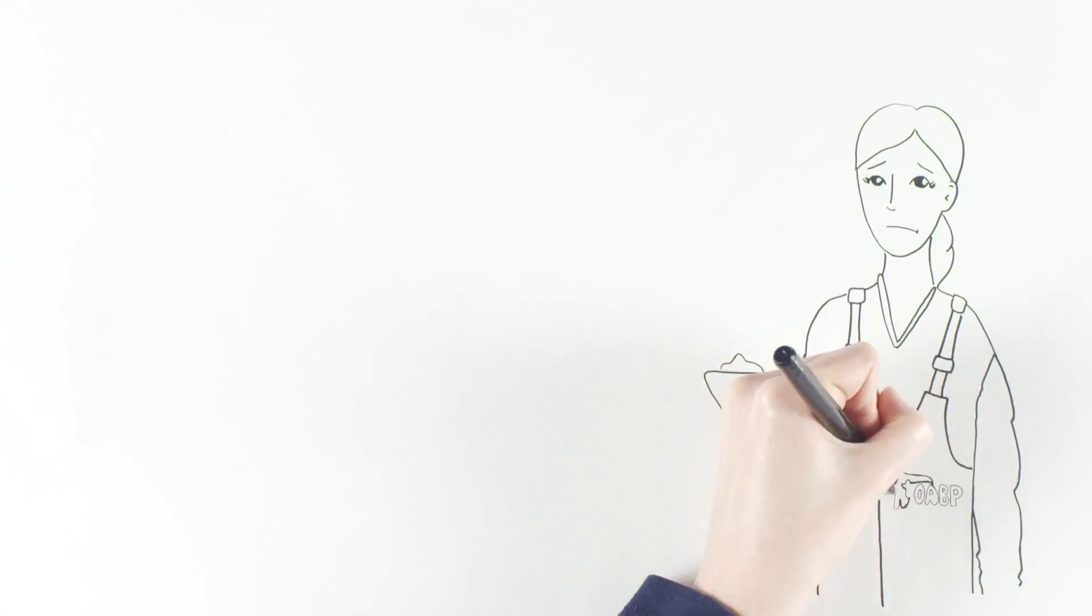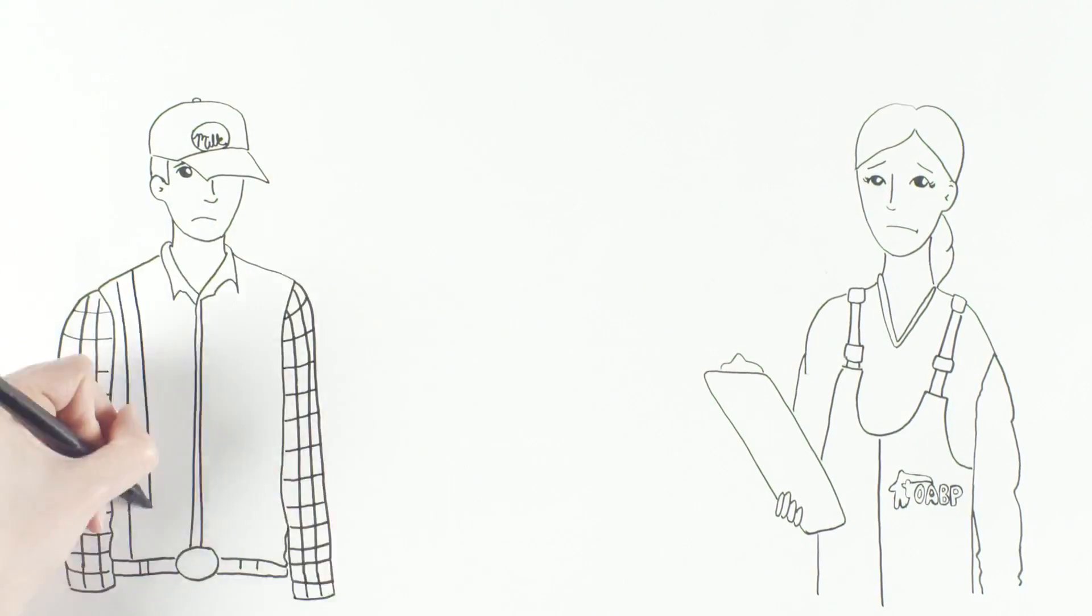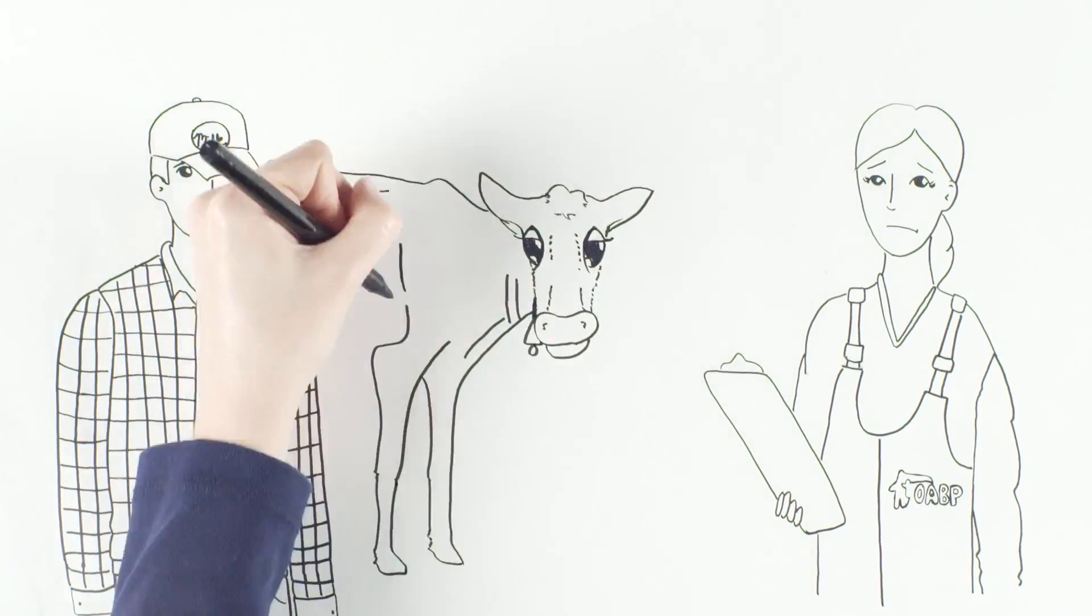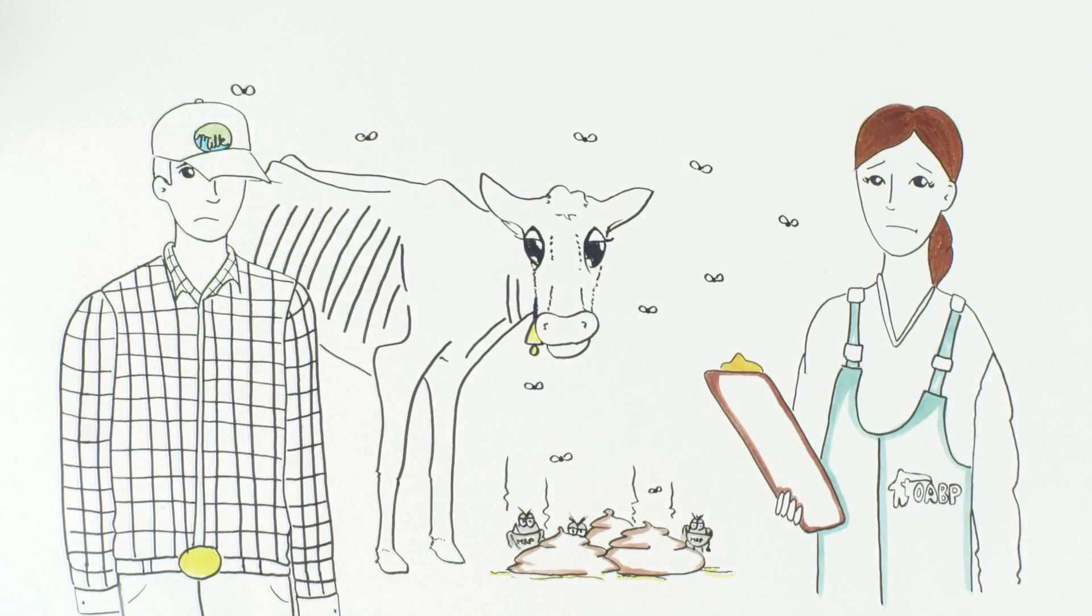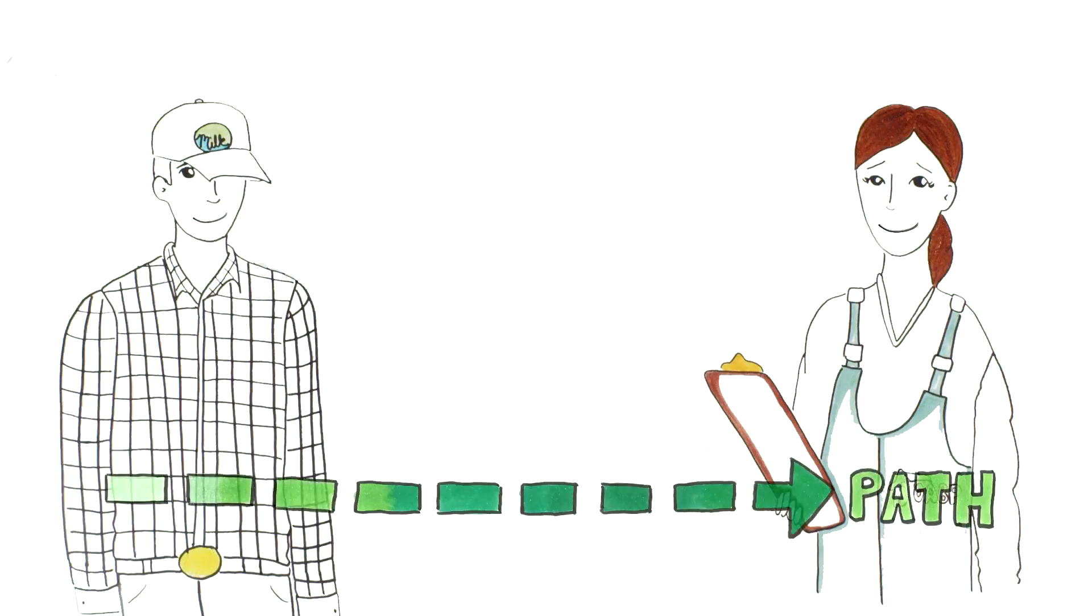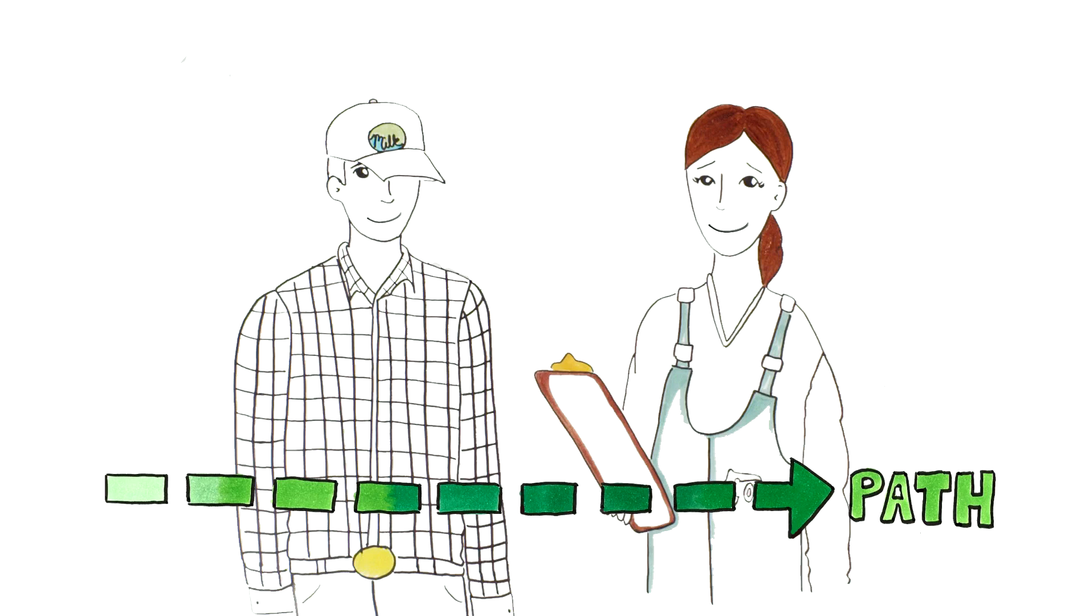Lately, Johne's disease has caused problems in a few of my clients' herds. You've met one of them. Bob was having a hard time with Johne's. He called me, and together we made a plan that he successfully used to control MAP.